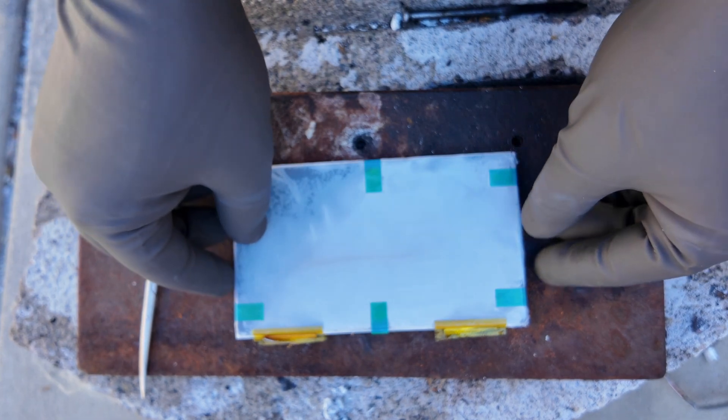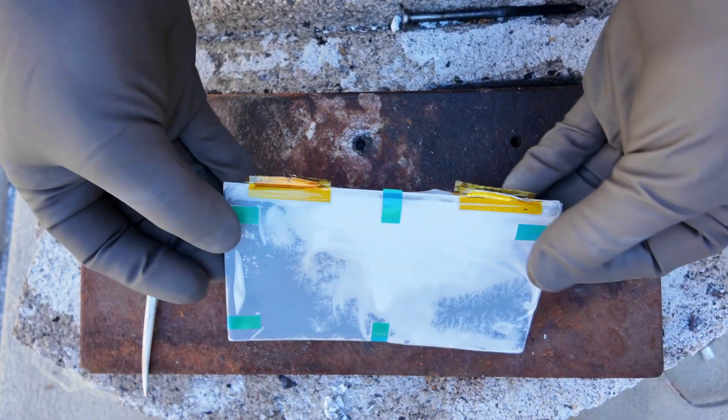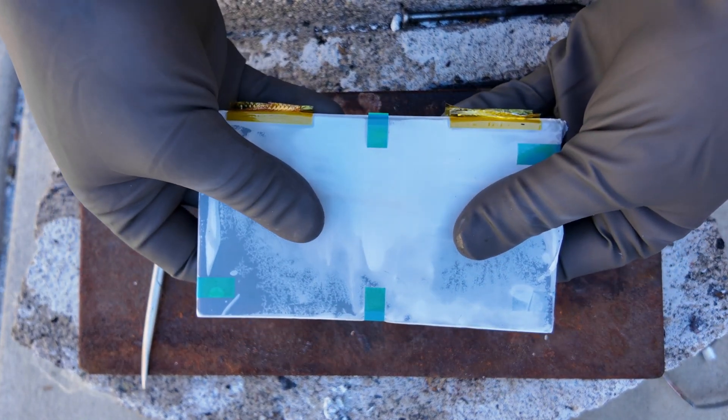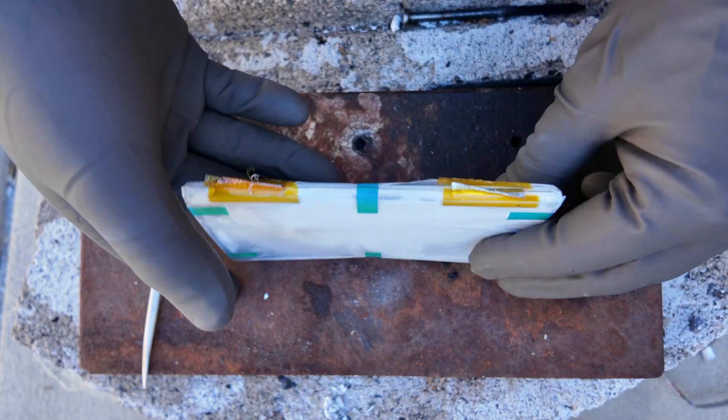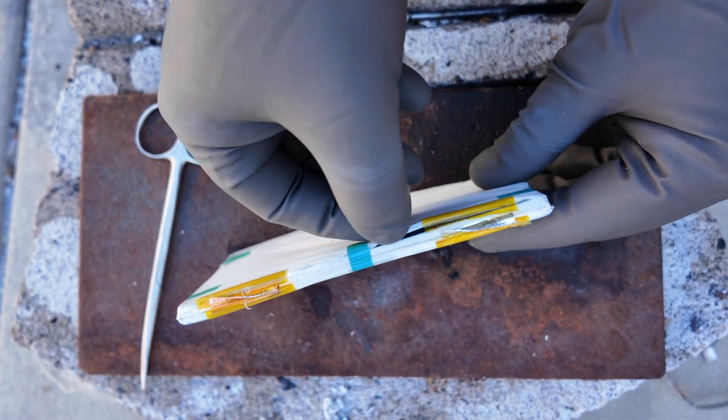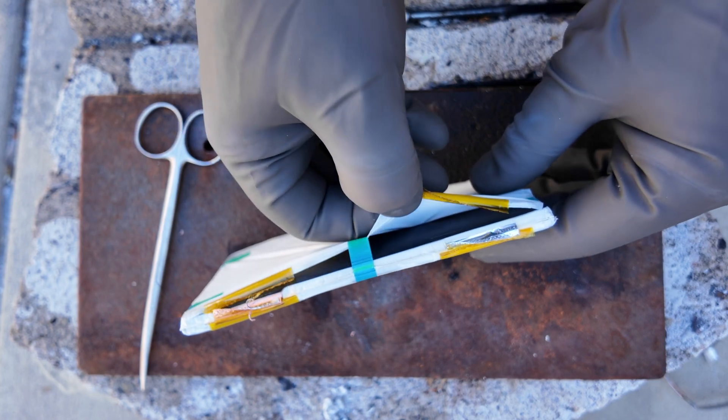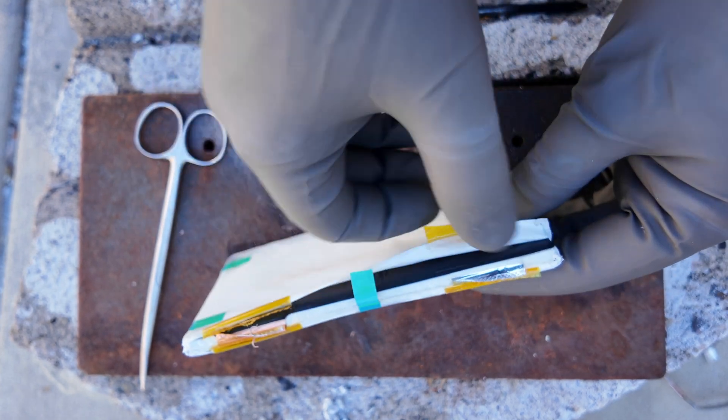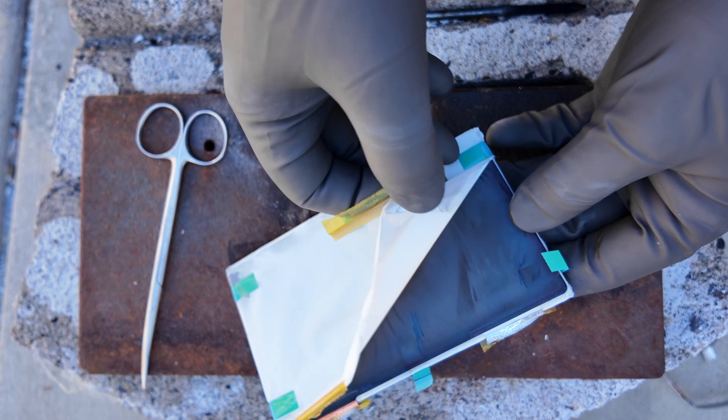Now this clear looking plastic is used as a separator. It goes in between each anode and cathode, or basically the little black sheets that we'll see inside here in a minute.